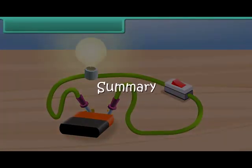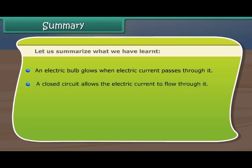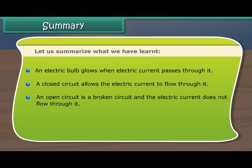Let us summarize what we have learned. An electric bulb glows when electric current passes through it. A closed circuit allows the electric current to flow through it. An open circuit is a broken circuit and the electric current does not flow through it. A switch is a device to close or open a circuit.